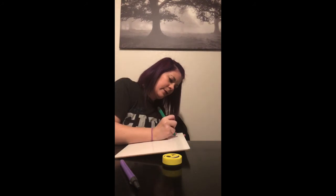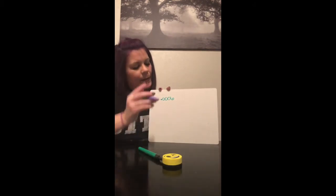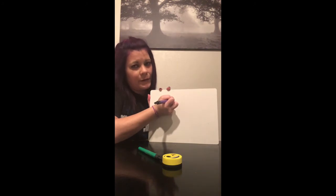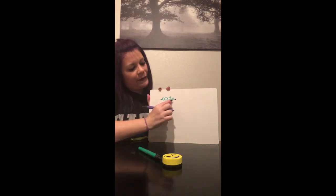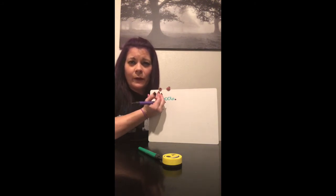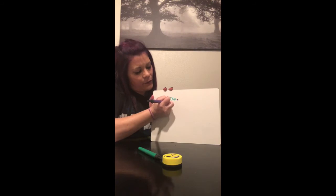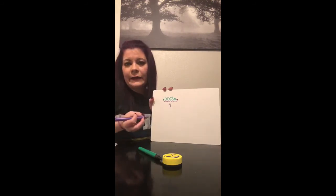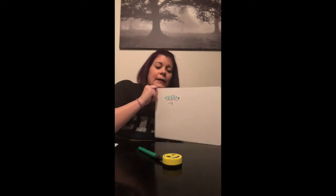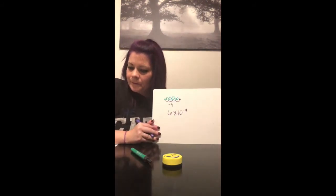Now let's try 0.0006. We already know where the decimal is — it's right there in the problem. If I put it here to make 0.6, that's not between 1 and 10 because 0.6 is less than 1. I have to put it here to make 6. We count how many times we moved it: one, two, three, four. It's going to be a negative exponent because we started with a number less than 1. So we rewrite it as 6 times 10 to the negative fourth.